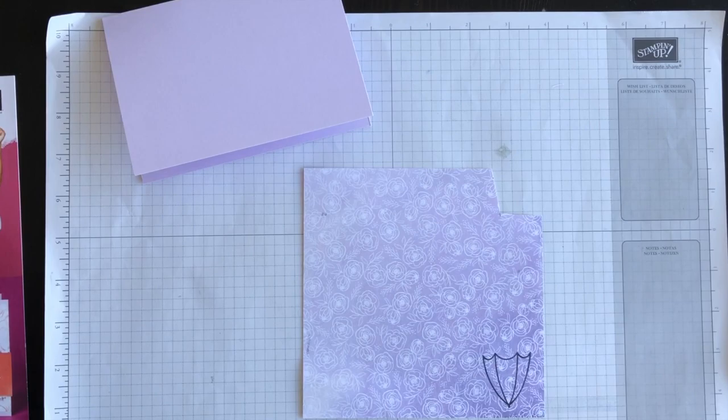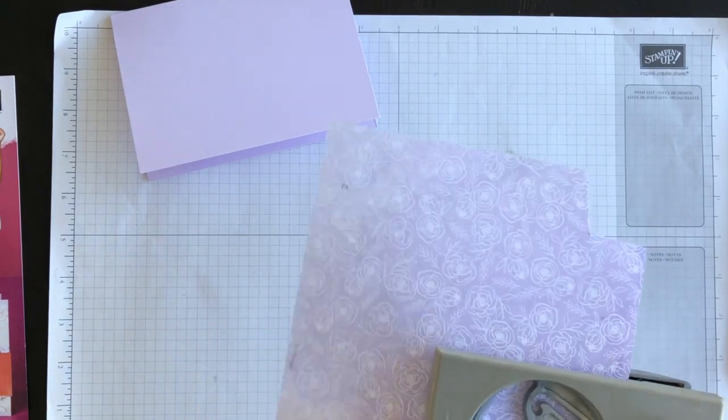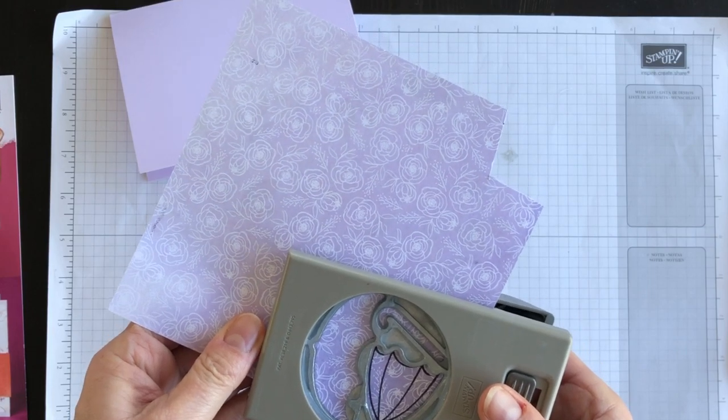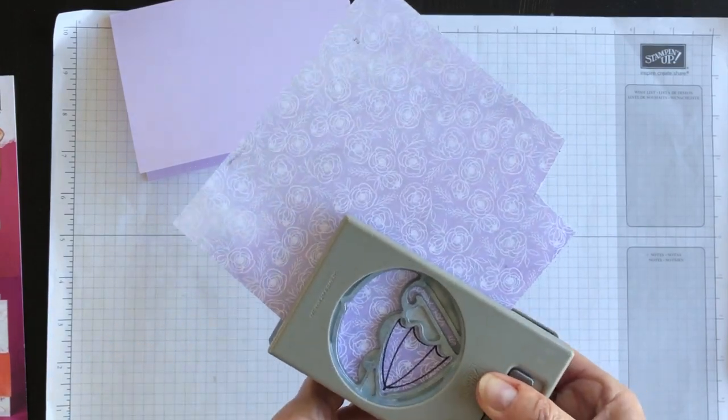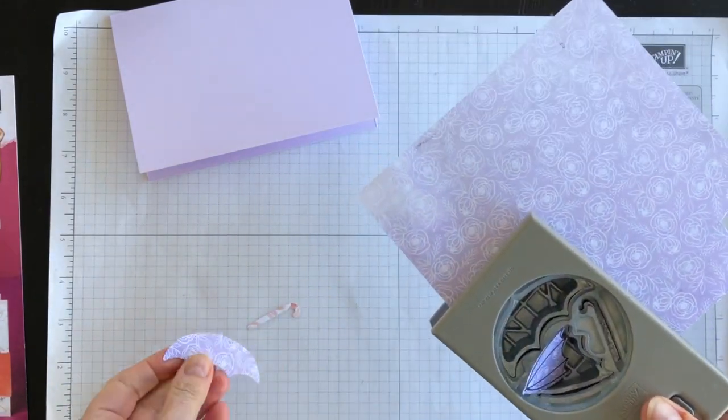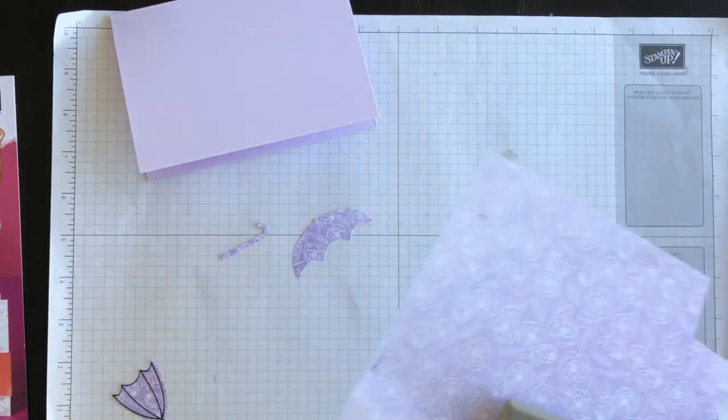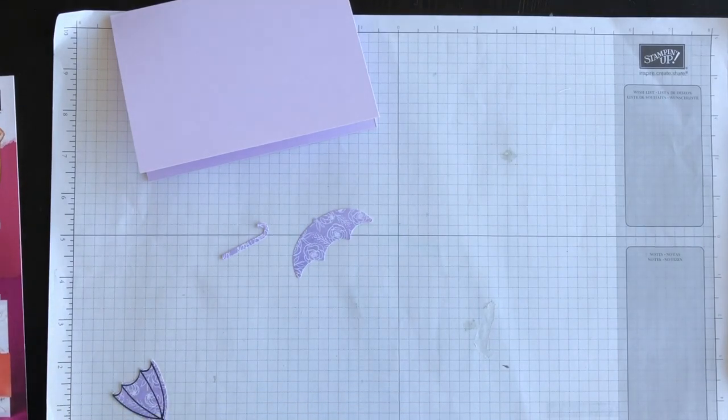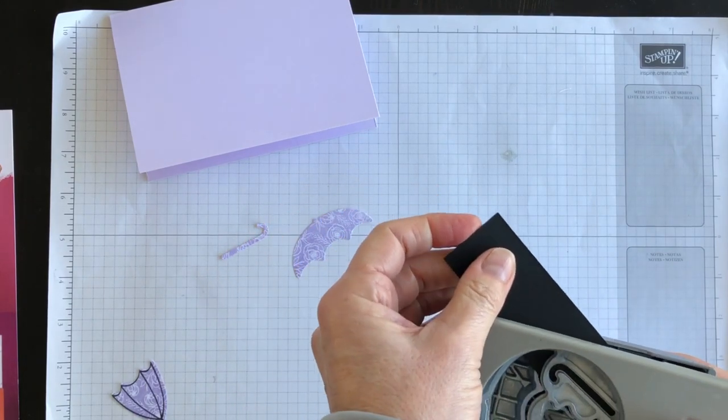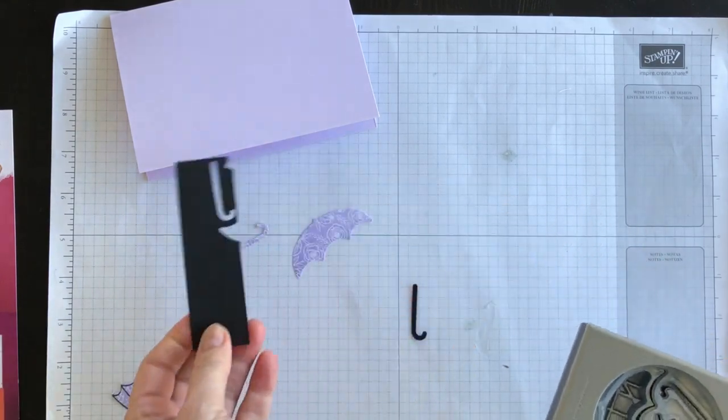And then I'm going to bring in my punch, and I am going to punch it out and get it lined up first. I'm not a very good visual figure-outer, but I think this will work. Now, when you use this punch, you are going to get, unless you were really strategic about your placement, you are going to get the other umbrella and the little handle, and that's okay. I'm going to set that aside and use it later. But what I want to do is bring in a piece of basic black, and I want my umbrella handle to be basic black. So I'm just going to punch that next.